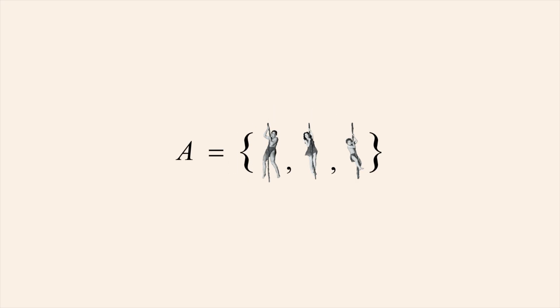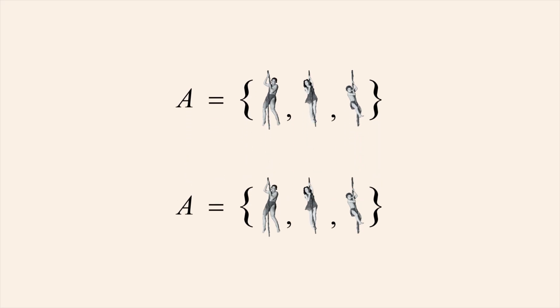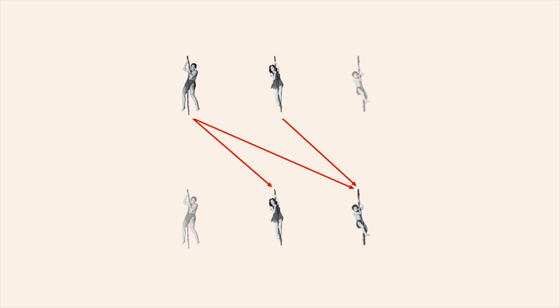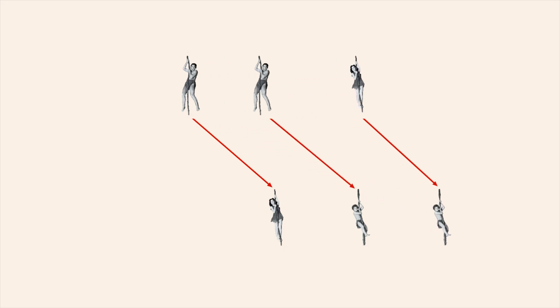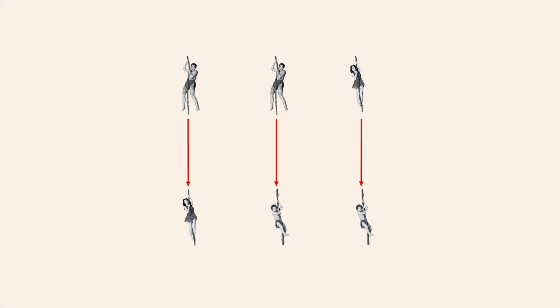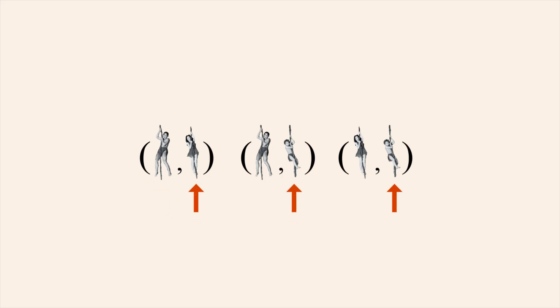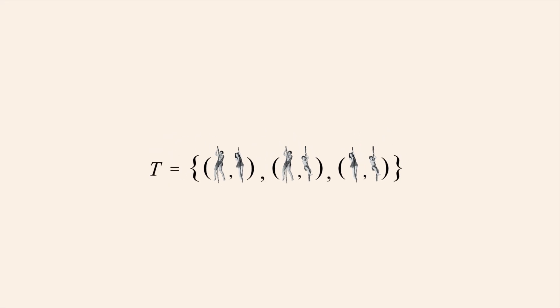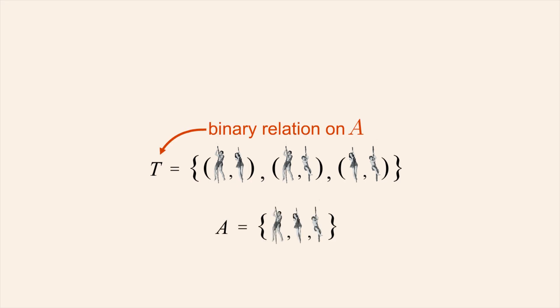Binary relations don't necessarily have to involve two different sets. A binary relation can exist between members of the same set. For example, we could take two copies of set A, which contains Tarzan, Jane, and Boy, and draw arrows from each member to every member who is shorter. So this relation is represented by three ordered pairs where the first element of each ordered pair is the taller person and the second element is the shorter person. Let's call this relation T.